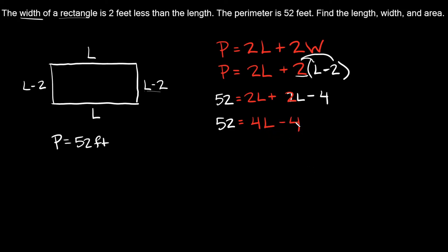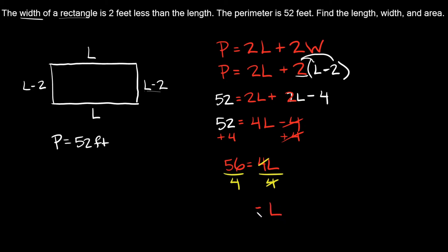Solving for L, I need to get rid of this minus 4, so I'm going to add 4 on both sides. The minus 4 plus 4 cancels out to 0, so we're left with 4L, and that's equal to 52 plus 4, which is equal to 56. Now dividing by 4 on both sides, these 4s cancel out and we're left with L, which equals 56 divided by 4, which is 14. All of our problem is in feet, so L is equal to 14 feet.